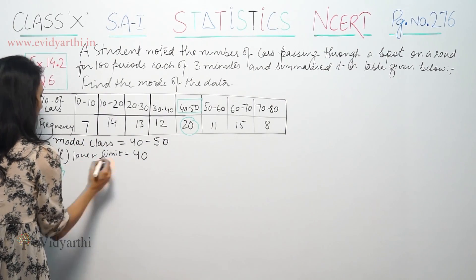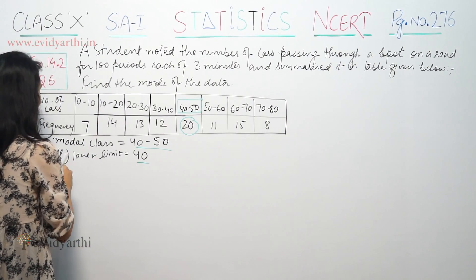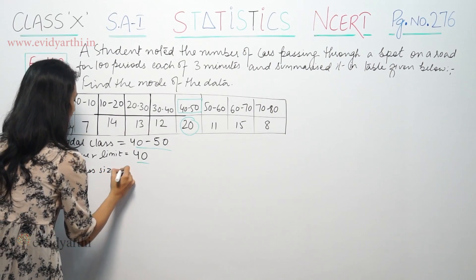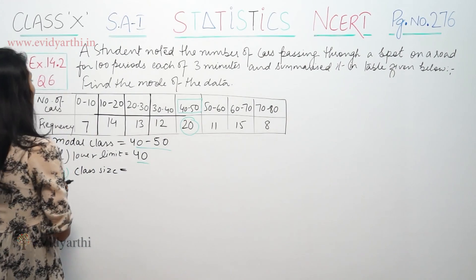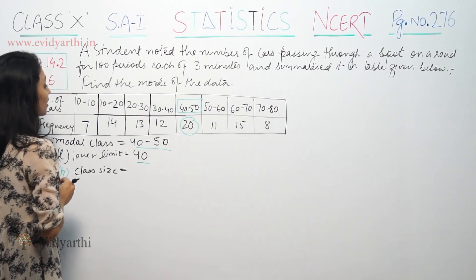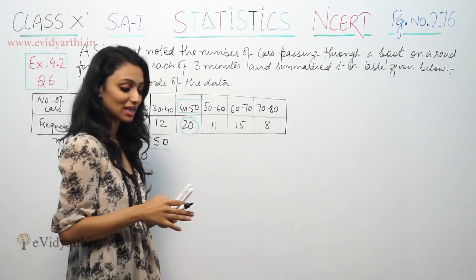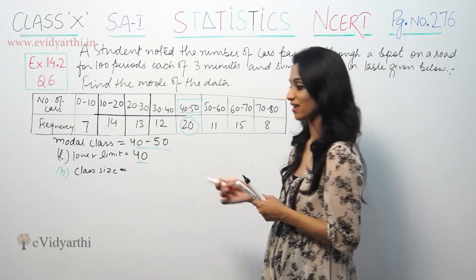Next, class size, now H. Class size is upper limit and lower limit, their difference. If we look at 10 here, 0-10, their difference is 10. 10 to 20, their difference is 10. So the modal class size is 10.